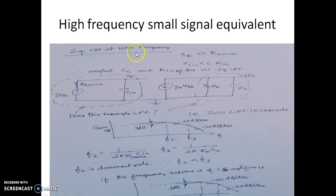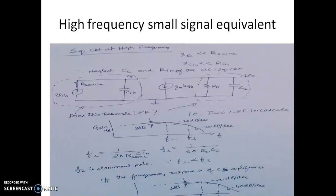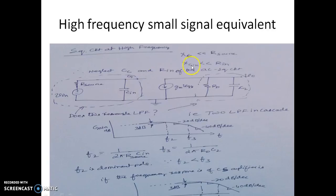Now let us see how the equivalent circuit looks when the frequency of the input is very large. At higher frequencies, the reactance offered by the capacitances is small. Compared to the reactance offered by the capacitor, R_source is larger, so we neglect the coupling capacitor CC. We also neglect R_in because R_in offers very large impedance compared to Cin. Since the reactance offered by Cin is smaller, we retain the smaller one.